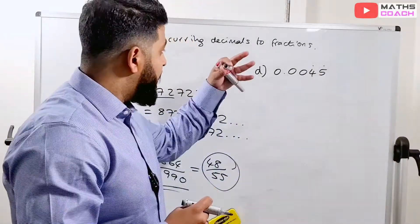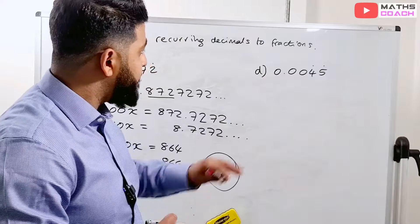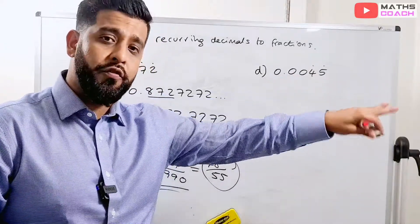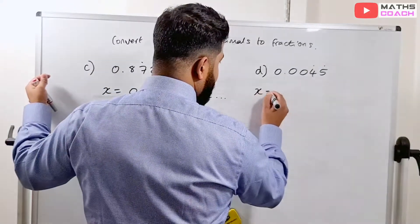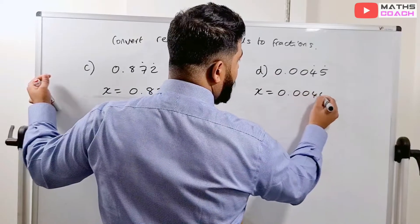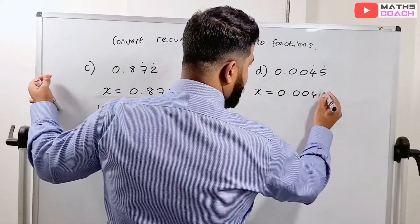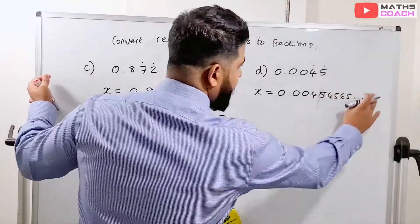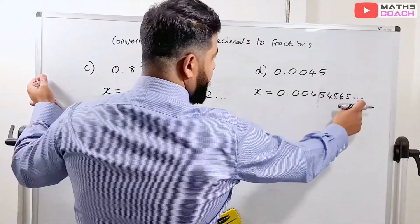Right, so on to our last example here. We've got 0.00454545, which is the repeating number. So let's do this. x is equal to 0.00454545, all the way. Three dots is enough.